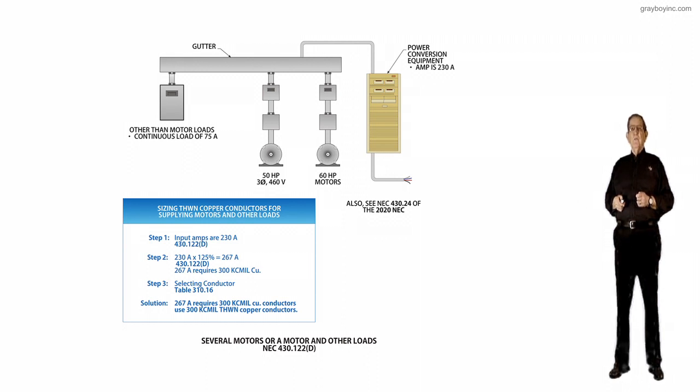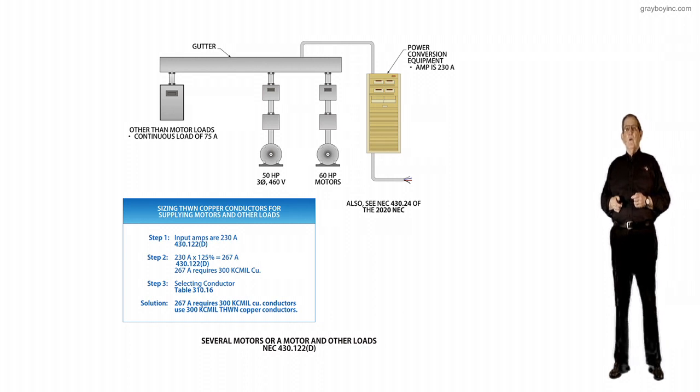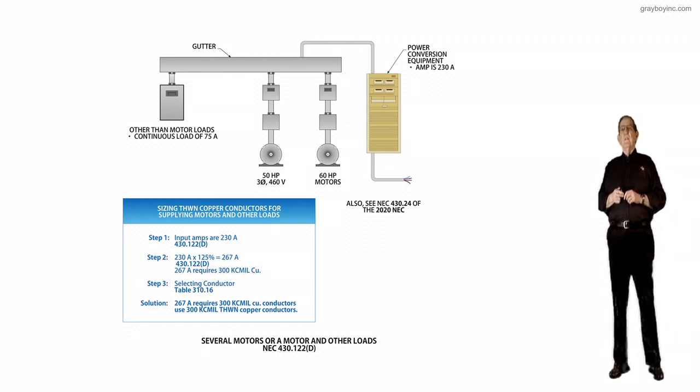So the 267 amps requires a 300 KC mil copper conductor. So we go to the table 310.16, and we select 263 amps, and it requires a 300 KC mil copper conductors. And we would use those THWN copper conductors, and that would take care of it.